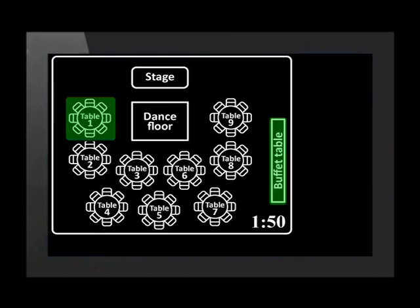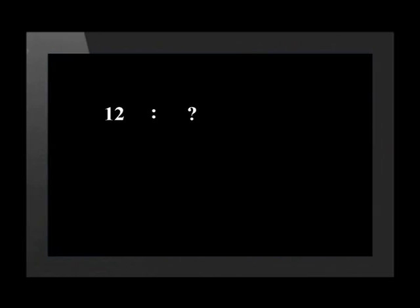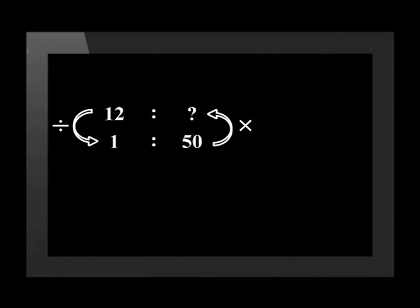Did you notice that the scale of the diagram is 1 to 50? This means that every one centimetre on the seating plan represents 50 centimetres in reality. The buffet table measures 12 centimetres on the plan. Let's use the scale to find the actual length. First we write down the ratio we need to find, then we write the given scale underneath. We draw in two arrows — the down arrow shows divide and the up arrow tells us to multiply. 12 divided by 1 is equal to 12, and 12 multiplied by 50 is equal to 600.